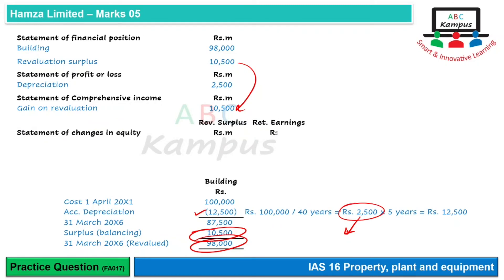Agar hum statement of changes in equity banate hain, to ismein total comprehensive income se hamare paas revaluation surplus mein yeh other comprehensive income aa jayegi. Lekin retained earnings mein profit ki figure jo hai wo question mein given nahi hai; agar profit ki figure given ho to wo retained earnings ke andar hum likh denge. Transfer yahan par nahi hoga, kyunke jo revaluation hai wo year end par hui hai.